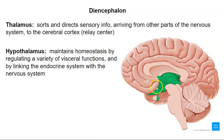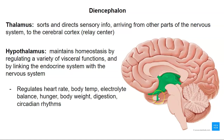The hypothalamus is below the thalamus. It does a lot of things: it's involved with maintaining homeostasis, regulates a variety of visceral functions, and it links the endocrine system to the nervous system. Specifically, it regulates heart rate, body temperature, salt and electrolyte balance, hunger and body weight, digestion, and sleep/wake cycles or circadian rhythms.